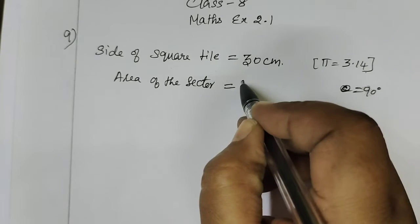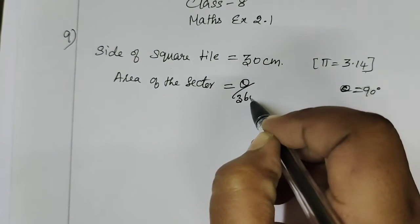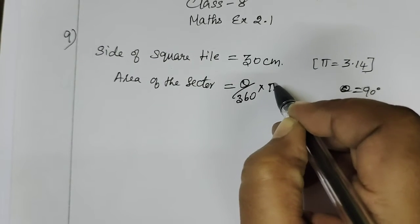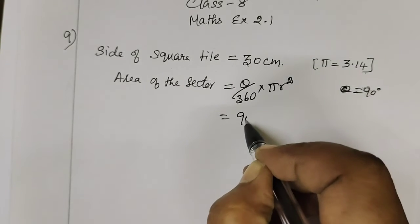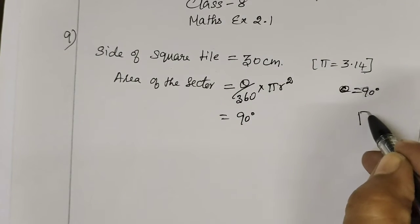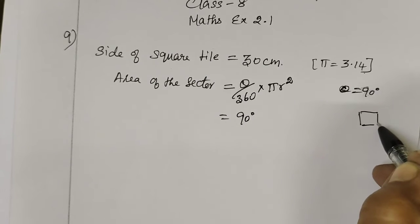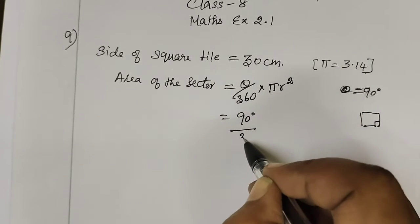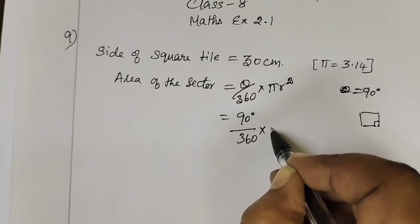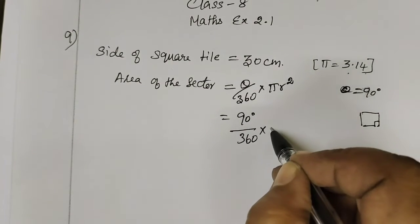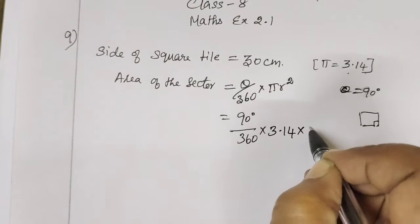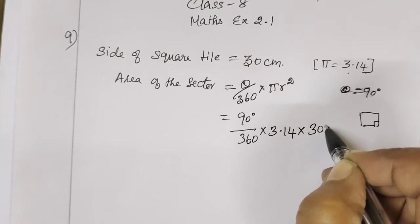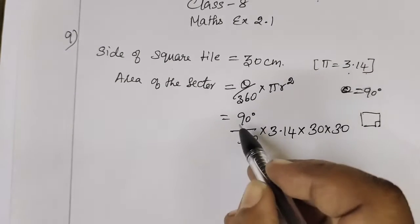Area of the sector formula: theta by 360, into pi r squared. So theta is 90 degrees. We substitute: 90 by 360, into pi which is 3.14, into r which is 30, into 30.